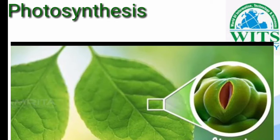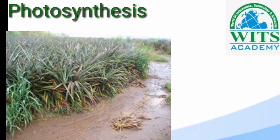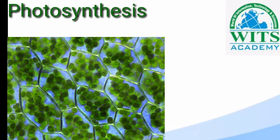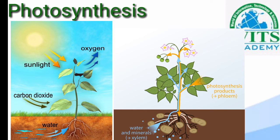جب carbon dioxide stomata کے ذریعے اندر چلا جاتا ہے تو leaf کے cells میں جا کر خانہ بناتا ہے۔ پھر جب ہم soil کو پانی دیتے ہیں تو water اور minerals soil میں سے آنا start ہوتے ہیں۔ Carbon dioxide اور water cell wall میں اور cells میں pass کرتے ہیں، جہاں ان کے پاس chlorophyll موجود ہوتا ہے — یہ green material ہے جو leaf cells میں پایا جاتا ہے۔